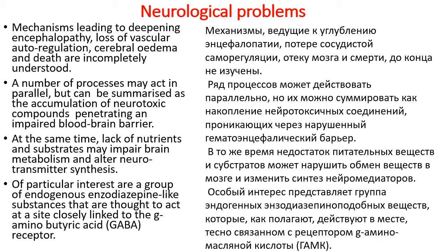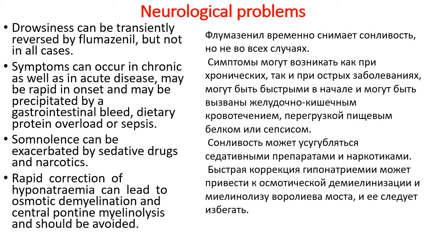At the same time, lack of nutrients and substrates may impair brain metabolism and alter neurotransmitter synthesis. Of particular interest are a group of endogenous benzodiazepine-like substances that are thought to act at sites closely linked to the gamma-aminobutyric acid (GABA) receptors. Drowsiness can be transiently reversed by flumazenil, but not in all cases. Symptoms can occur in chronic as well as acute disease, may be of repeated onset, and may be precipitated by a gastrointestinal bleed, dietary protein overload, or sepsis. Somnolence can be exacerbated by sedative drugs and narcotics.